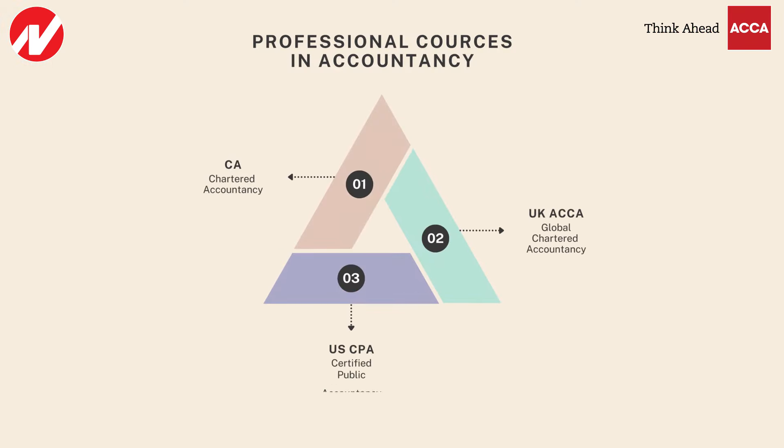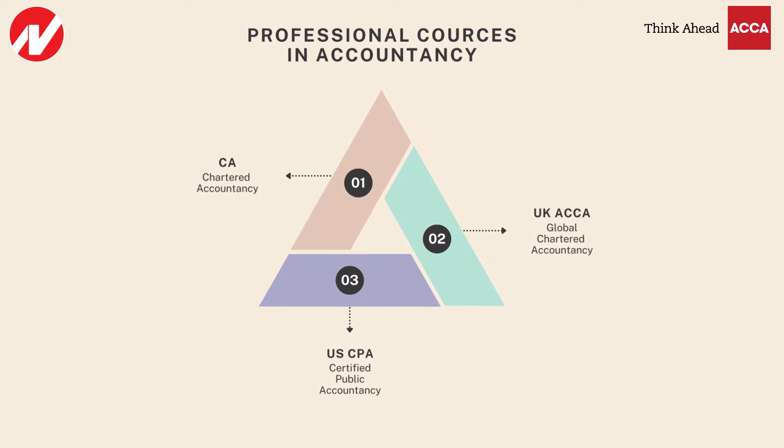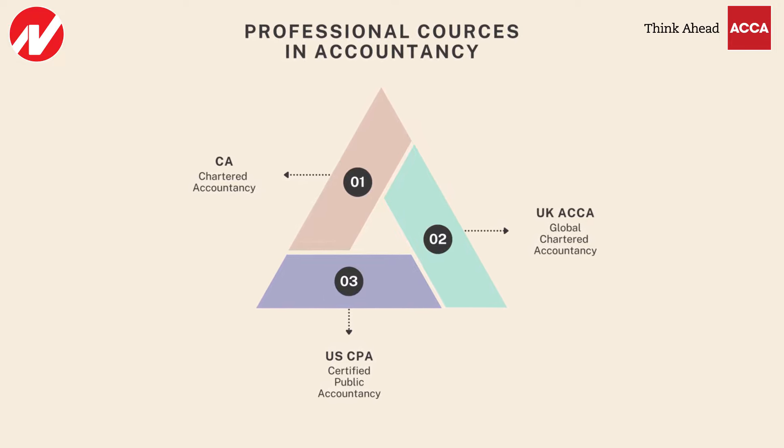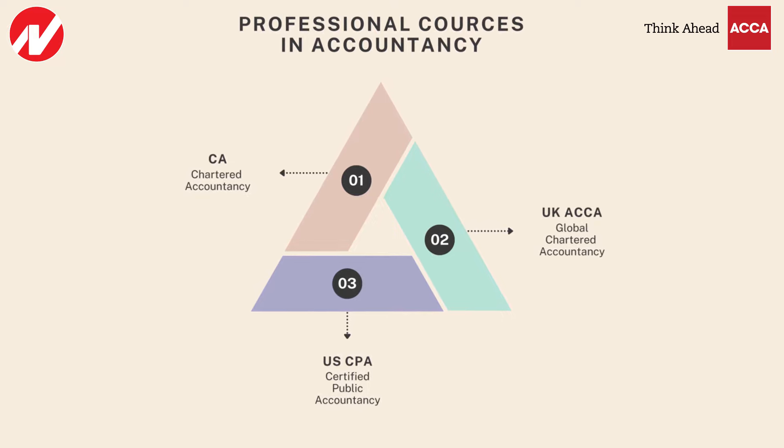My first question would be: what is UKACCA and why should one consider pursuing it? Basically in the accountancy profession, there are three major qualifications Indian students may consider. Number one is Chartered Accountancy, that is Indian CA. Second is UKACCA, also known as Global Chartered Accountancy. And third is US CPA — Certified Public Accountant.